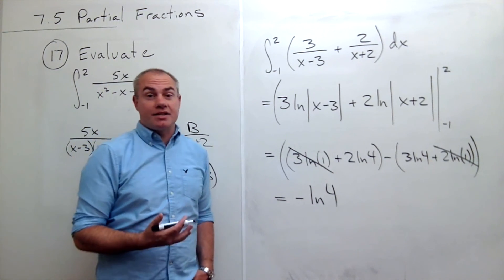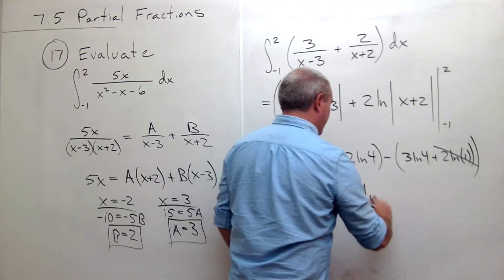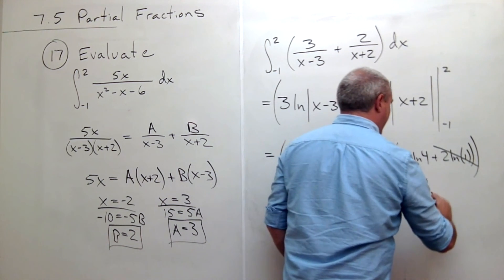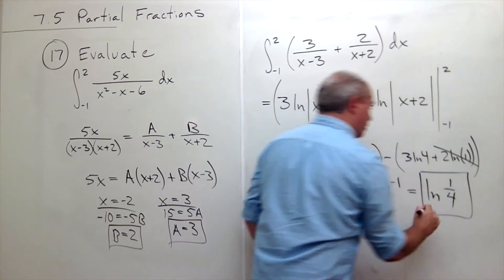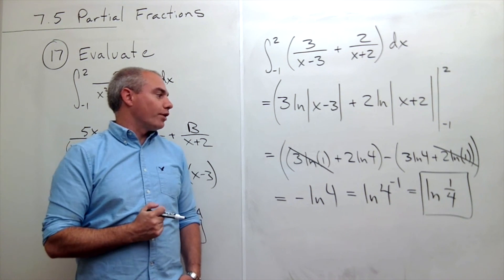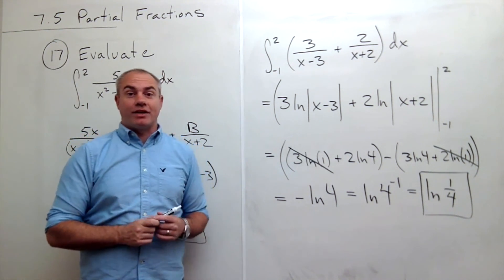And ultimately, I guess this is my answer. If you don't like this as much, I could write this as ln of 4 to the negative 1. Or I could write it as ln of 1 fourth. All of those are correct answers. So we get ln of 1 fourth as the answer to this definite integral. Thank you.